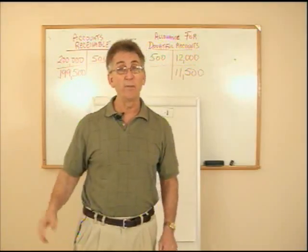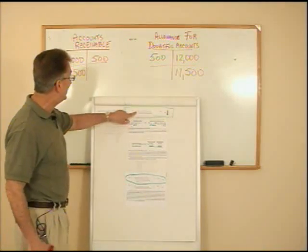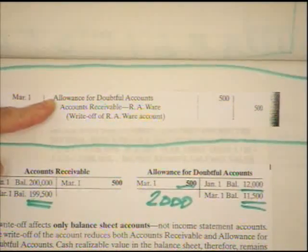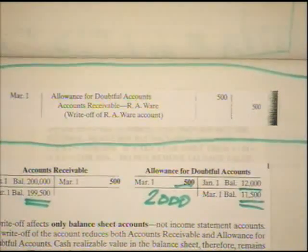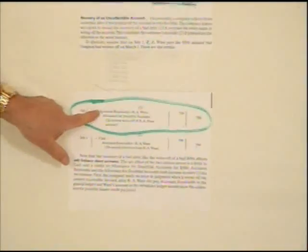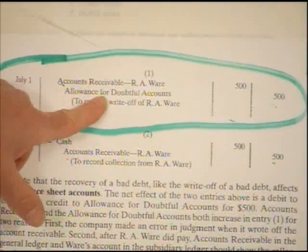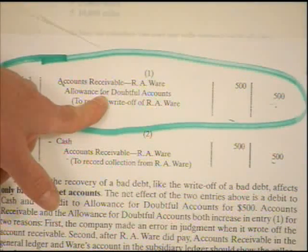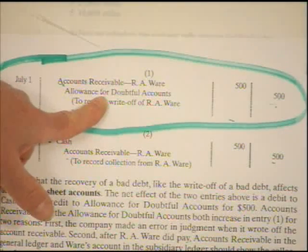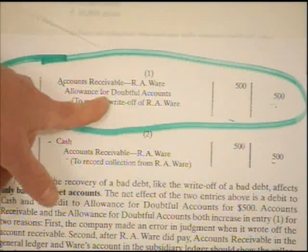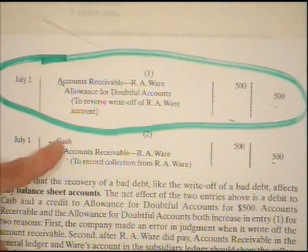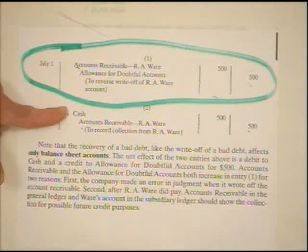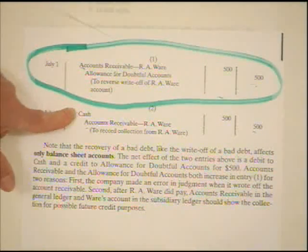First, we reestablish his account — remember, we wiped it out. We reverse that write-off entry: debit accounts receivable and credit the allowance for doubtful accounts. We flip it right back in to where it was. Then I take that money to the bank and put it in — debit cash, and remove his receivable. By reestablishing his account and then showing the money come in, I have a trail, and we always need to leave an audit trail. That's why we did it in that fashion.